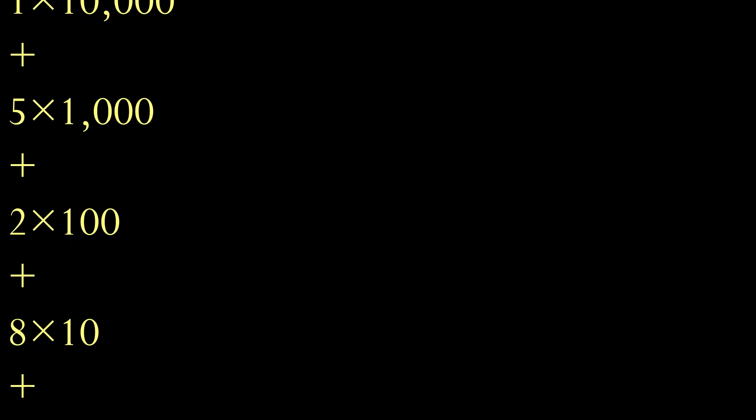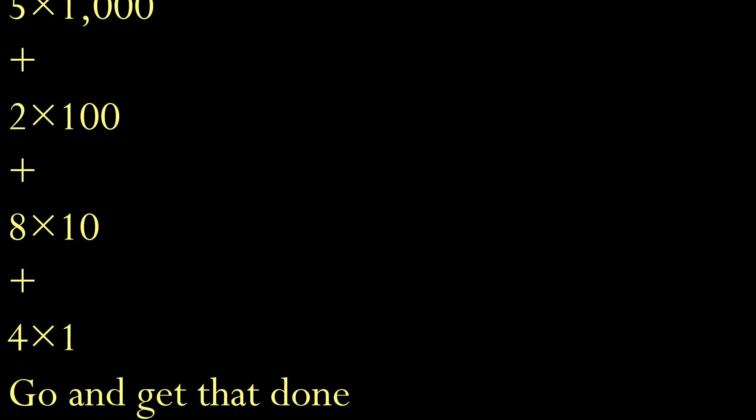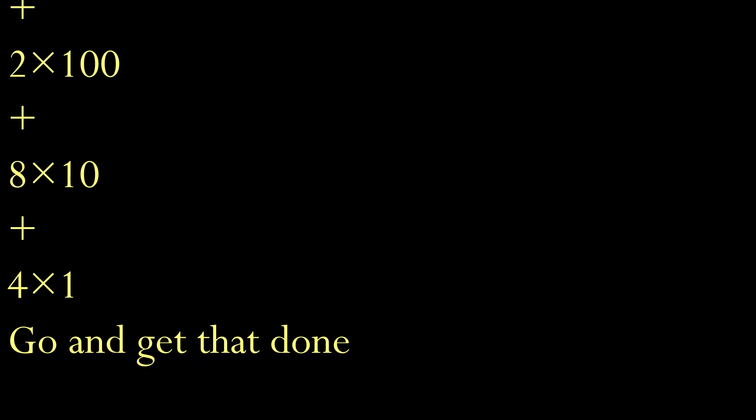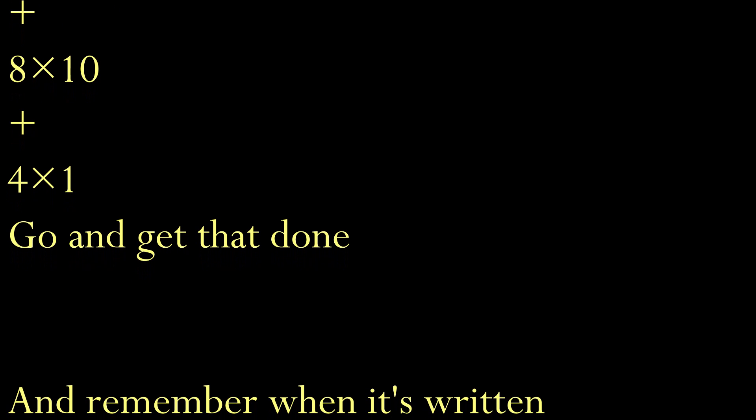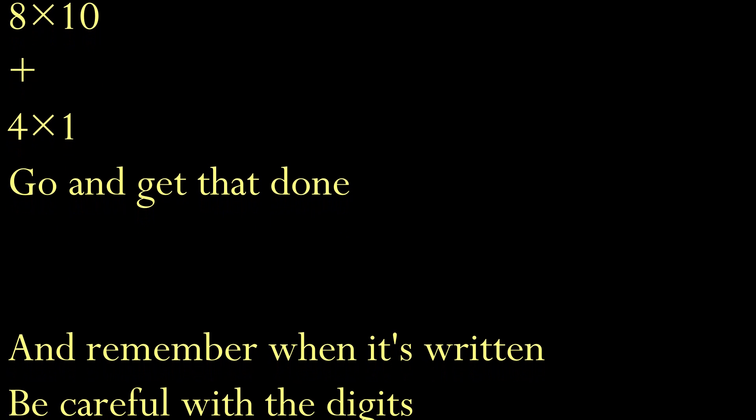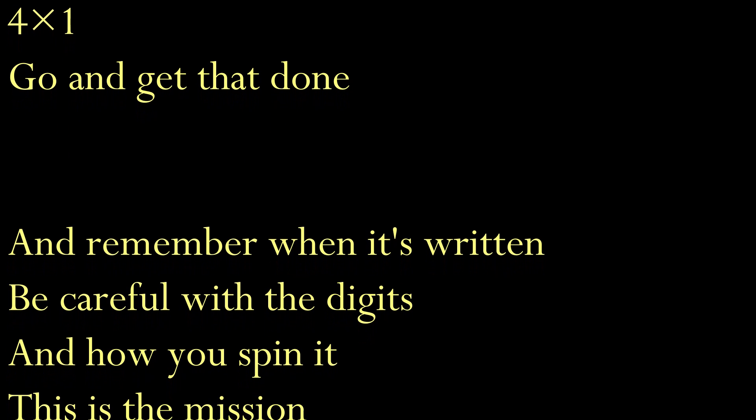You see each number times its value plus every other digit times its value. 1 times 10,000, plus 5 times 1,000, plus 2 times 100, plus 8 times 10, plus 4 times 1. Go and get that done.